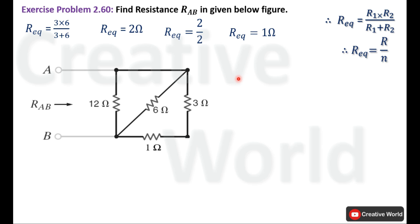Now the circuit is further simplified. These two resistances are connected in series, so we add them together: 3 ohm plus 1 ohm equals 4 ohm. We modify the circuit accordingly.